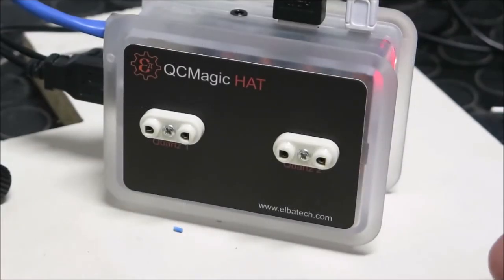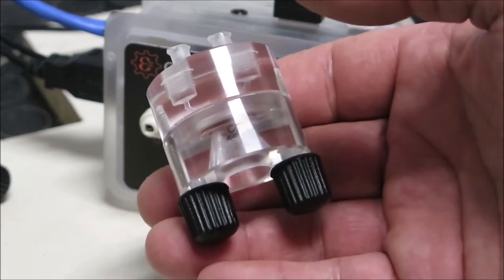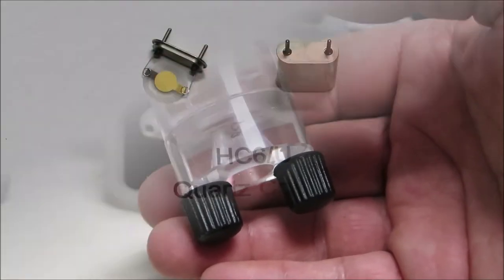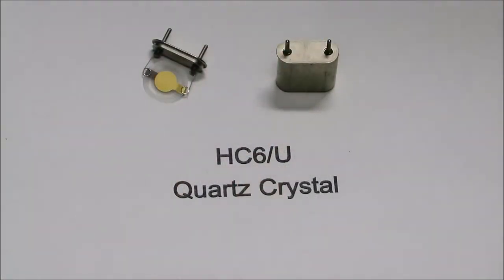This video tutorial shows how to use the QC Magic Hat measuring chambers. Our measuring chambers work with HC-6U or HC-48 quartz crystals. This is very nice because you can buy your quartz where you like. You are not forced to buy quartz from a specific provider.